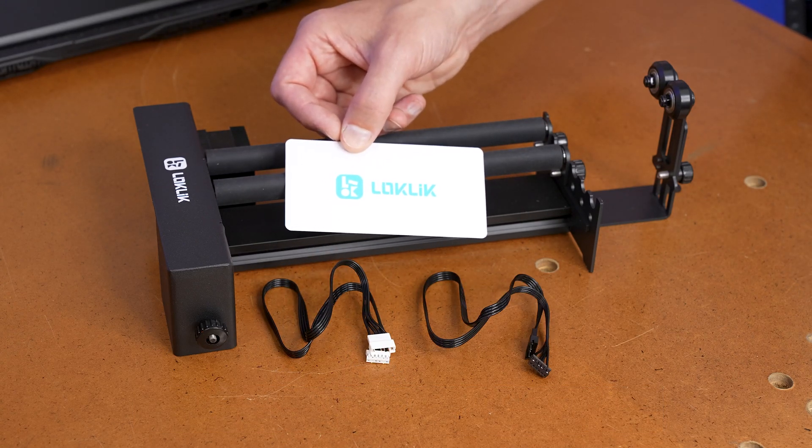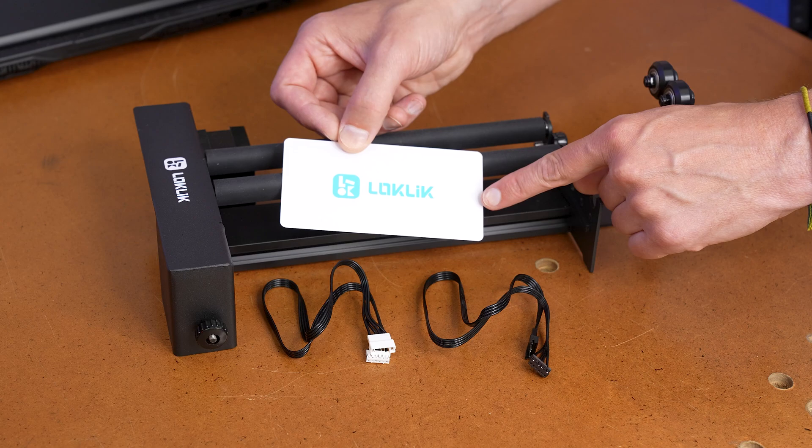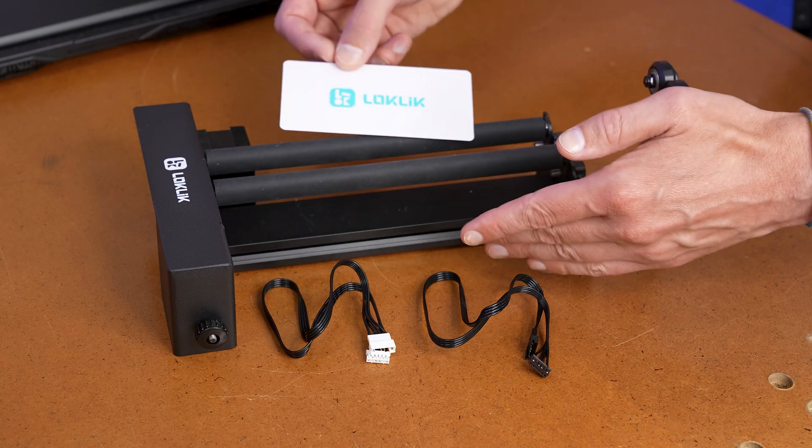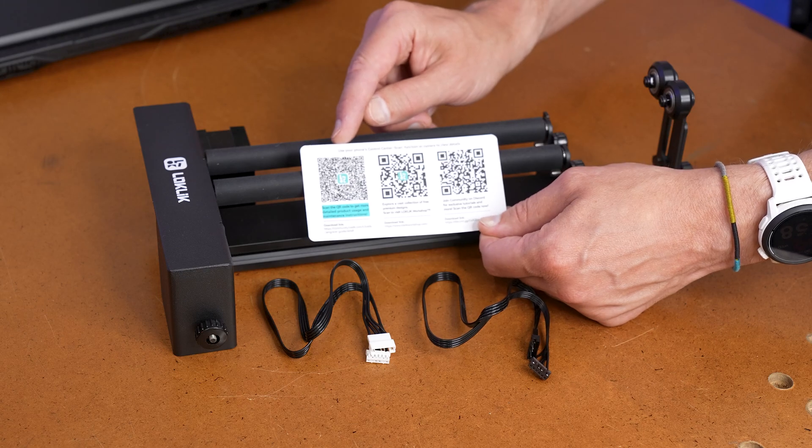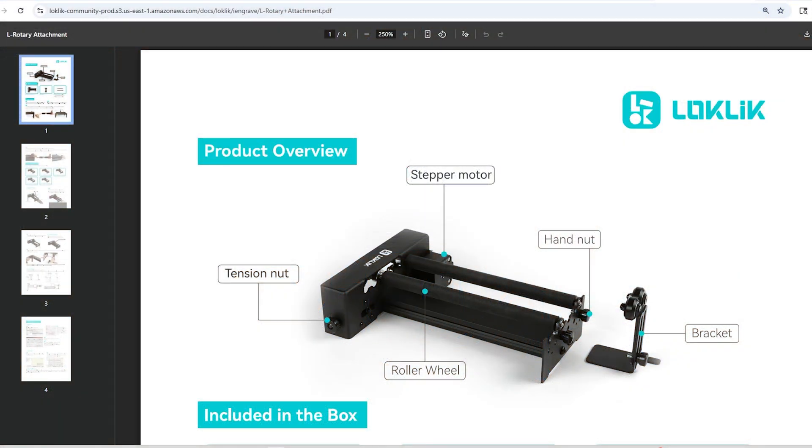Lastly, there's a white card that's included, and I think this is probably the most important part with the rotary kit, and that's because when I flip this open, there's a scannable QR code, and this is going to include all the directions that I need for setting up and using the rotary roller attachment.